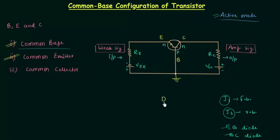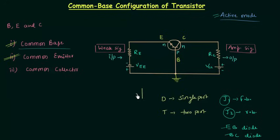Comparing a diode and a transistor: a diode is a single-port device, while a transistor is a two-port device. In case of a diode, we have simple VI characteristics, but in case of two-port devices like a transistor, we have both input and output characteristics.